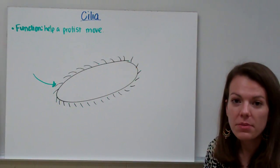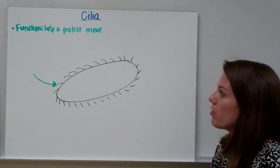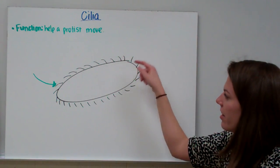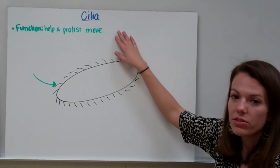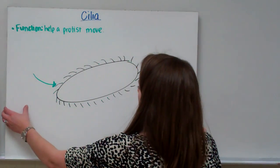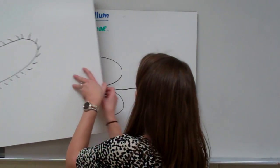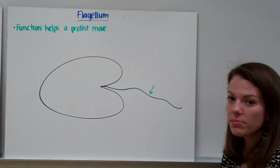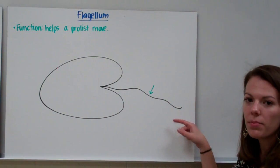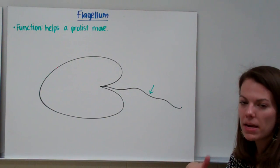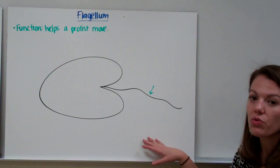A protist needs to be able to move, and it has three major adaptations that help it to move. The first one is cilia. Cilia kind of look like eyelashes or little hairs, and they help a protist to move. Another adaptation is a tail-like structure called a flagellum, which works like a propeller by spinning and moving back and forth in order to propel the protist through water.